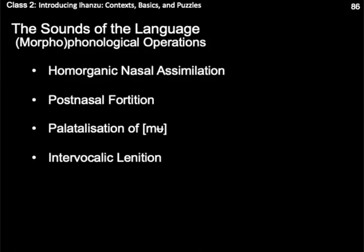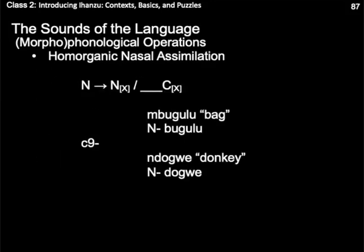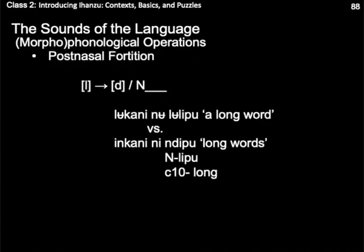The sounds of Ihanzu interact with each other in some notable ways. Sometimes these operations are restricted to certain morphemes, and other times they are more global. We'll talk about a few of the more salient ones here. First, a common operation in many Bantu languages is homorganic nasal assimilation. This occurs when the class 9 or 10 noun prefixes affix to a noun stem — the prefix will then become a nasal consonant with the same place of articulation as the consonant which follows it. Thus, if the class 9 morpheme affixes to the stem bugulu, we get mbugulu, meaning 'bag', whereas if the same class 9 prefix affixes to the stem dogwe, we get mdogwe, meaning 'donkey'. Further, if an L follows a nasal, it will be realized as a D — this is referred to as post-nasal fortition.